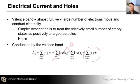So in a semiconductor there are two types of electrical current: one arising from electrons in the conduction band, and another arising from holes in the valence band.